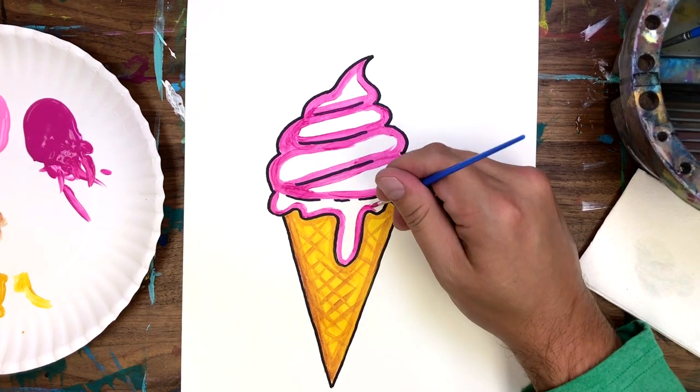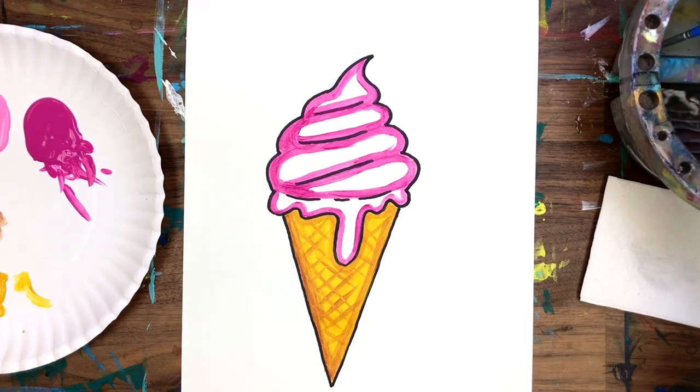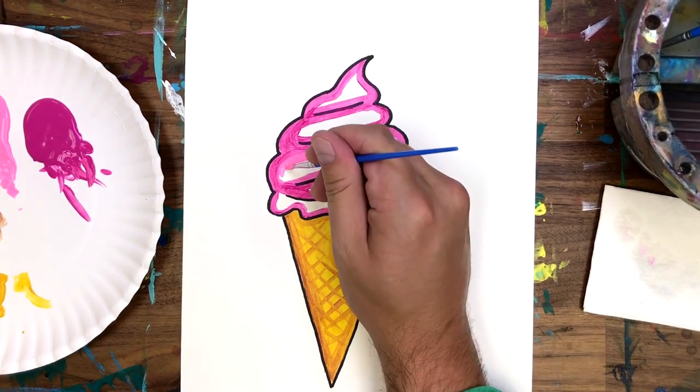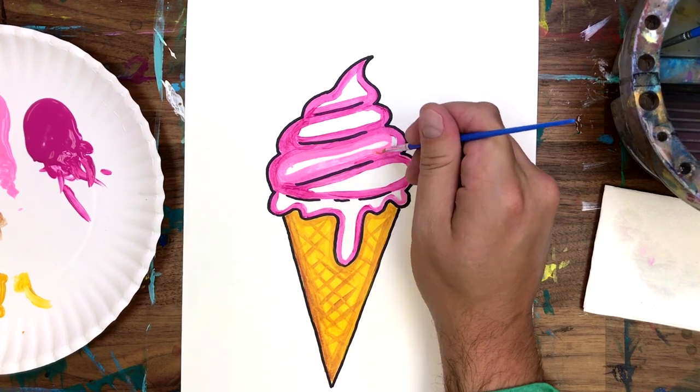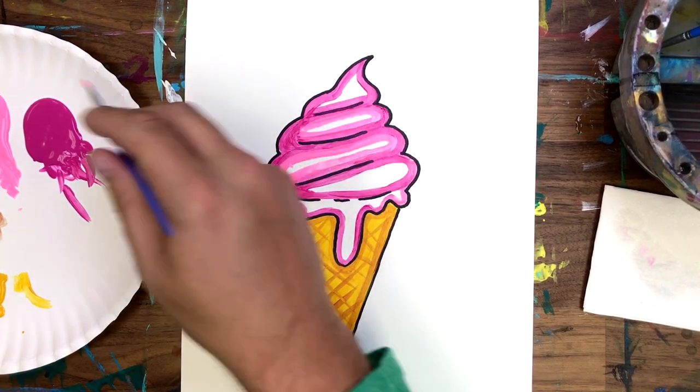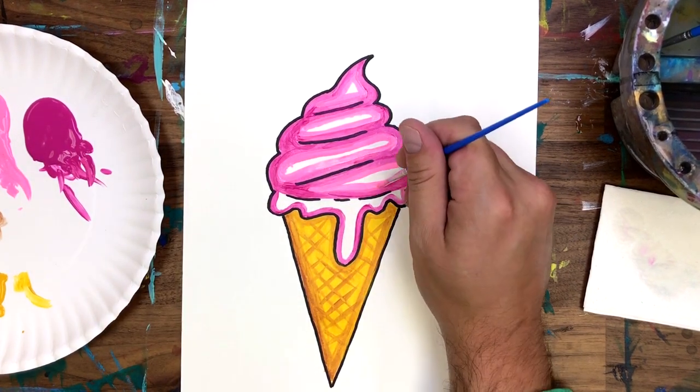Now that we're done with our darkest color, wash that brush or grab a new marker and get ready to do our next layer of color. I'm going with a slightly lighter pink. Did you know an average American consumes about 48 cups of ice cream throughout the year?